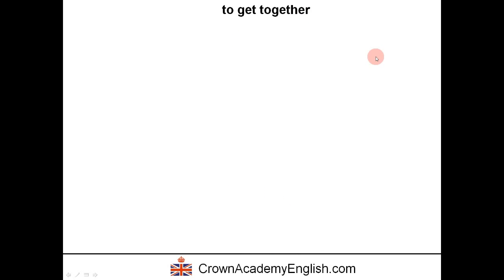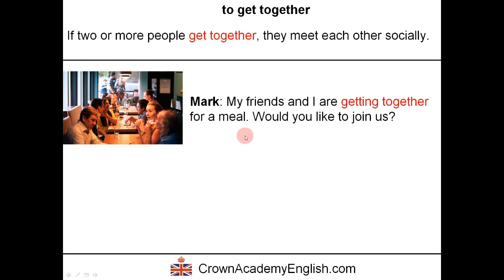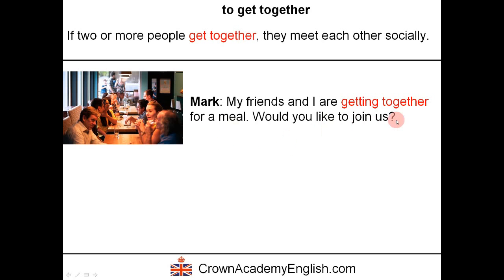'To get together' — if two or more people get together, they meet each other socially. For example, Mark says 'my friends and I are getting together for a meal, would you like to join us?' This is a nice way of giving someone an invitation — we are getting together for a meal, for a party, for a drink, for a coffee. Would you like to join us?